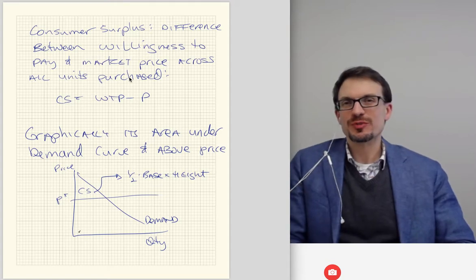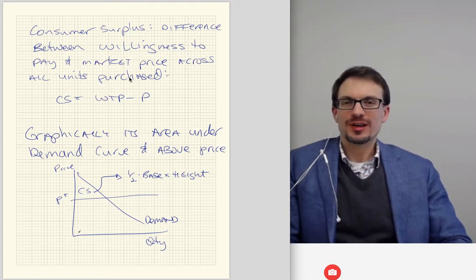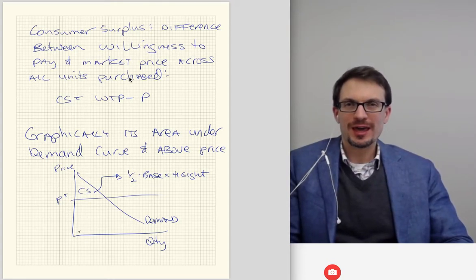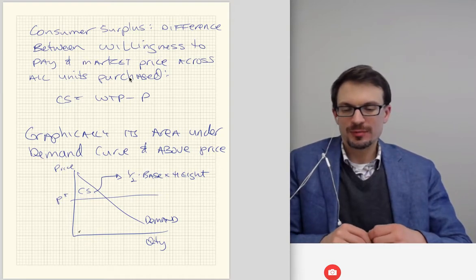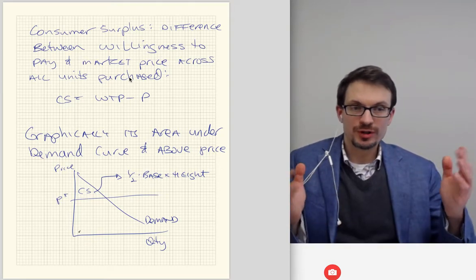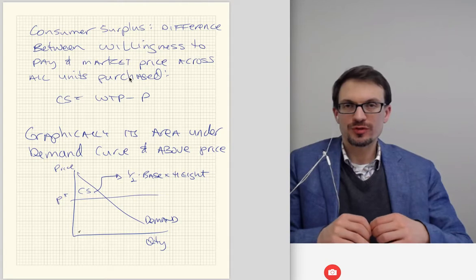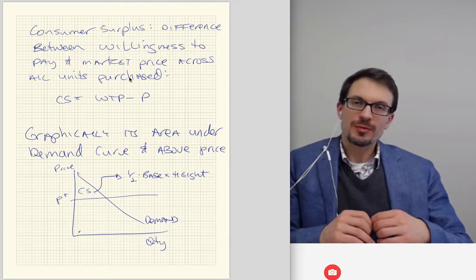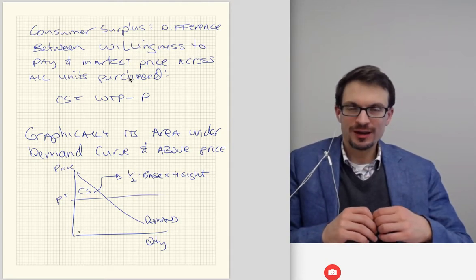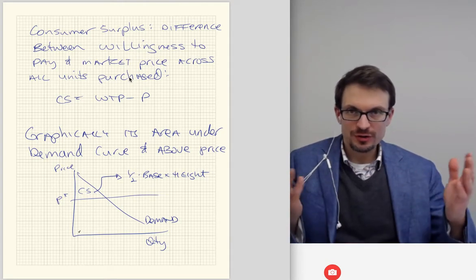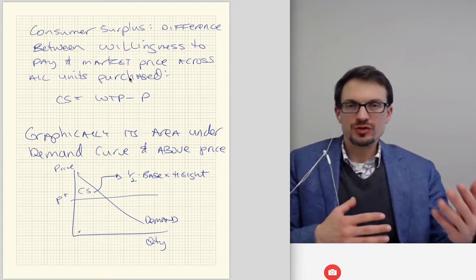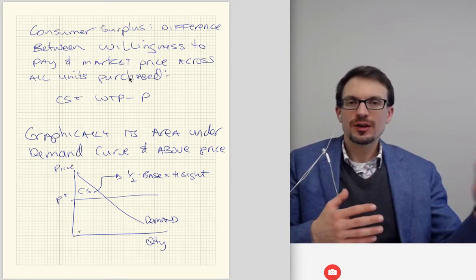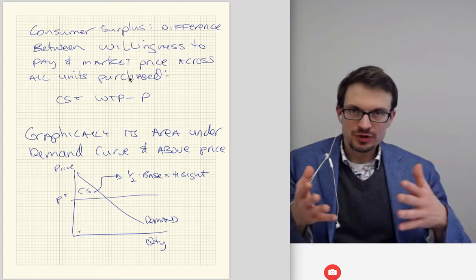Think about our definition of consumer surplus — it is the difference between the willingness to pay and the actual market price. Think about something you'd be willing to buy, how much you'd be willing to pay for it, how much it's worth to you, and then how much you're actually required to pay. The difference is your consumer surplus, across each unit you'd buy.